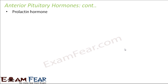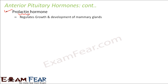The next hormone is prolactin. The word 'lacto' is related to milk. This hormone regulates the growth and development of the mammary glands. After a baby is born, during the lactation period when the mother breastfeeds, the mammary gland secretes milk. The growth and development of the mammary gland is due to the prolactin hormone.